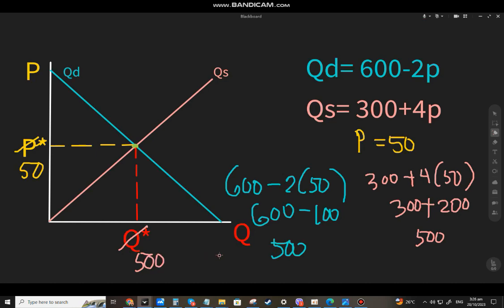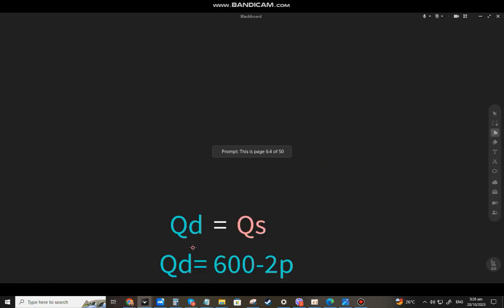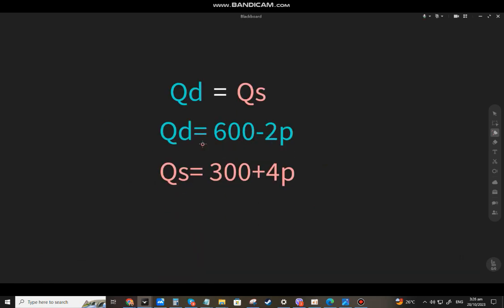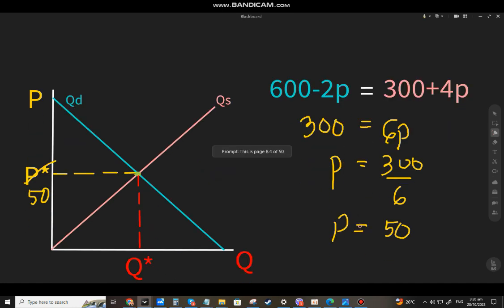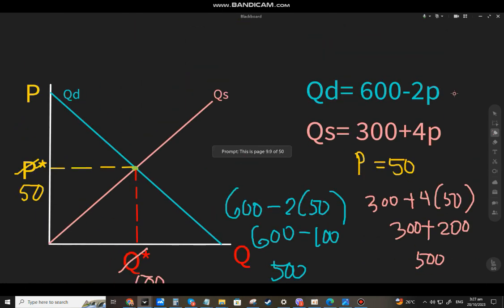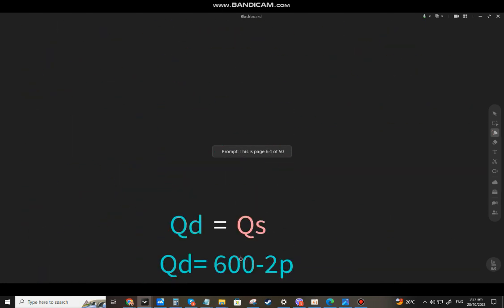To summarize: set Qd equal to Qs, solve for the price P first. Once you have P equals 50, substitute it into either equation. The market equilibrium shows that the ideal price is 50 pesos, and at that price, the quantity supplied and demanded is 500 units. That's the end of the lesson on how to find market equilibrium.